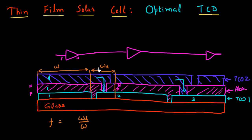W_D would be fixed by how precisely I can align these different scribes. So a way to reduce this fraction would be to maximize my cell width W. If I can make each of these cells very wide, the contribution due to this dead region becomes insignificant.